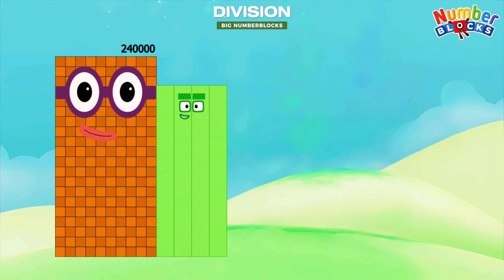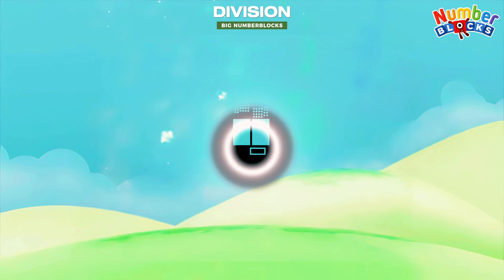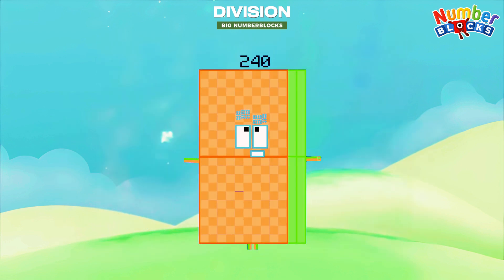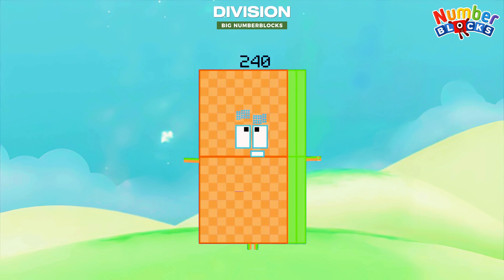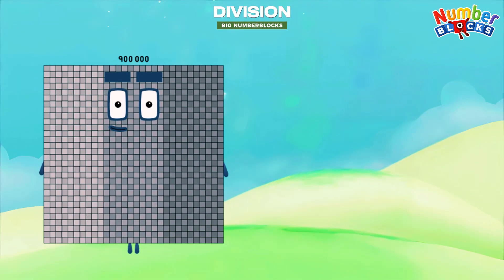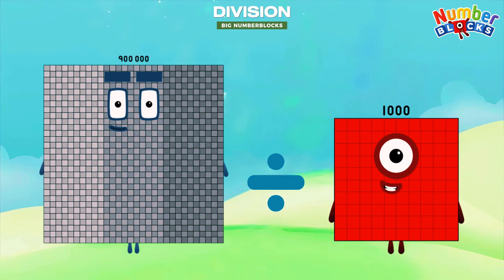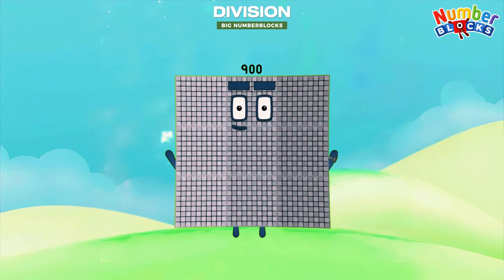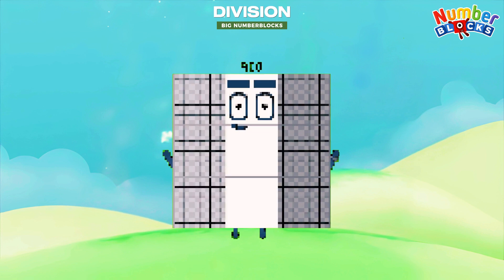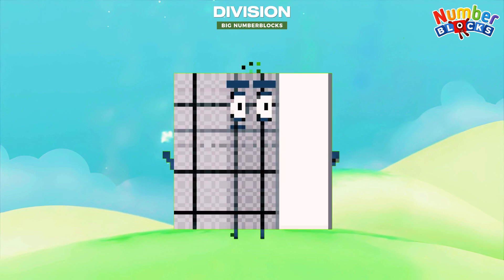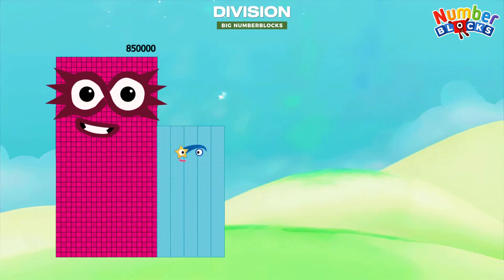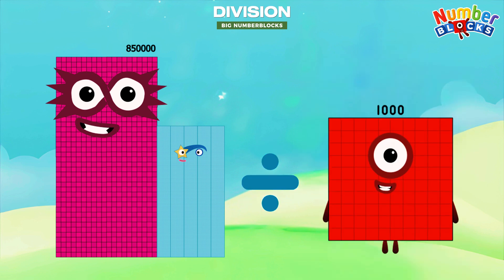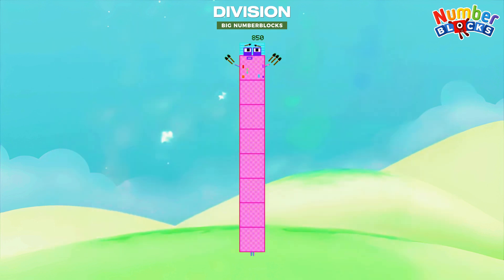Two hundred and forty thousand divided by one thousand equals two hundred and forty. Nine hundred thousand divided by one thousand equals nine hundred. Eight hundred and fifty thousand divided by one thousand equals eight hundred and fifty.